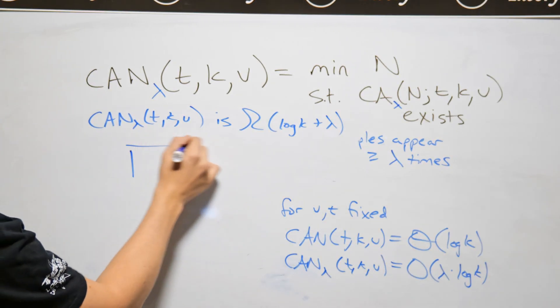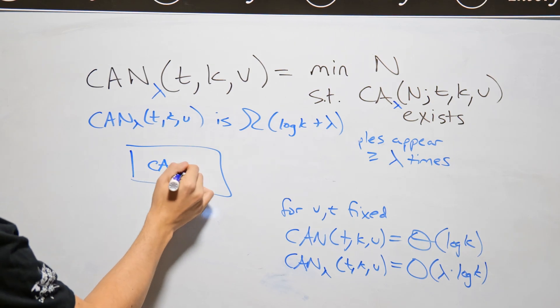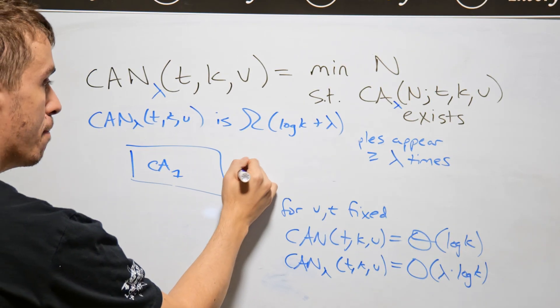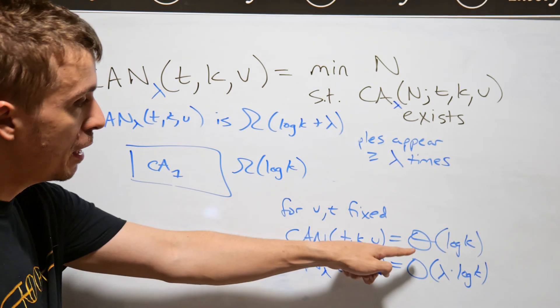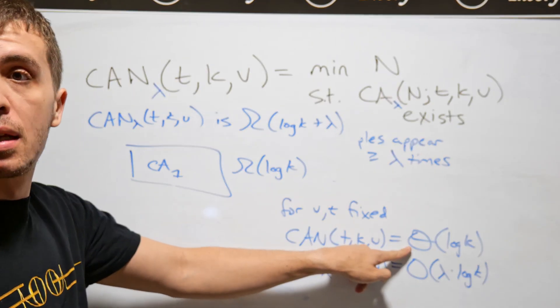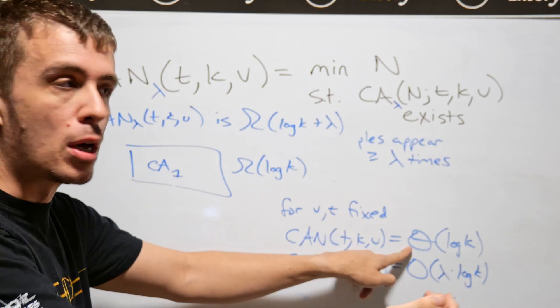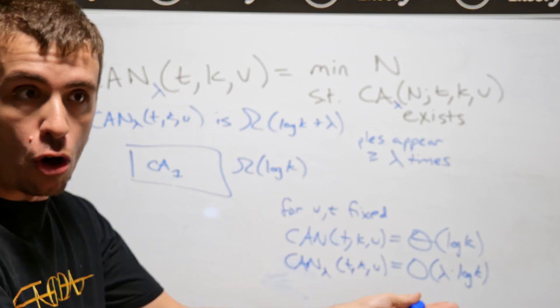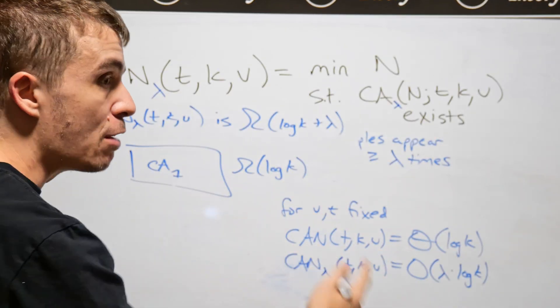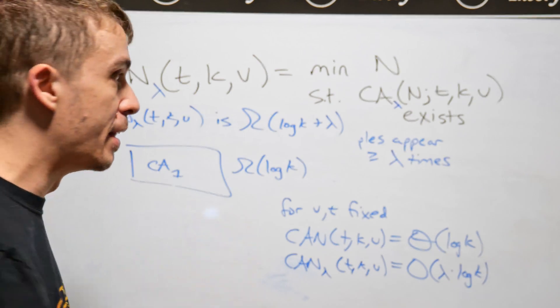So suppose that we take any old covering array, so this is covering array of index one. And we know it must take at least log k rows in order to do that, because the true number is always a constant times log k. So no matter what you do, you must have at least log k rows at all, because that's the best possible answer that you can do anyway. So you can't do any better than that.